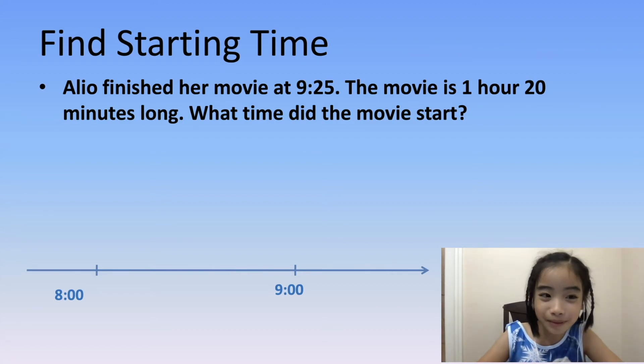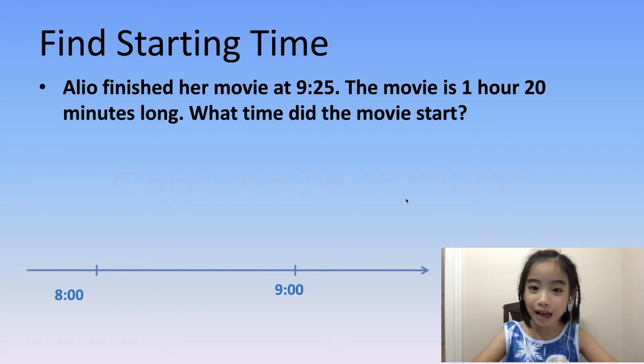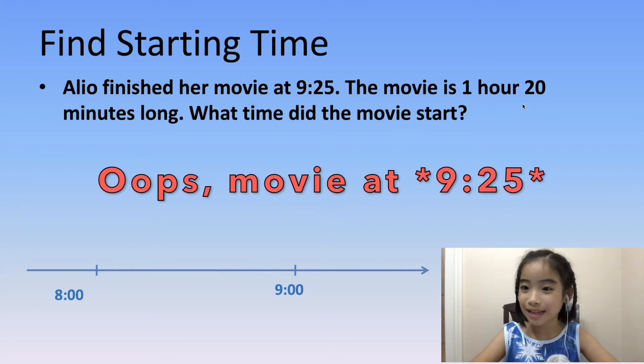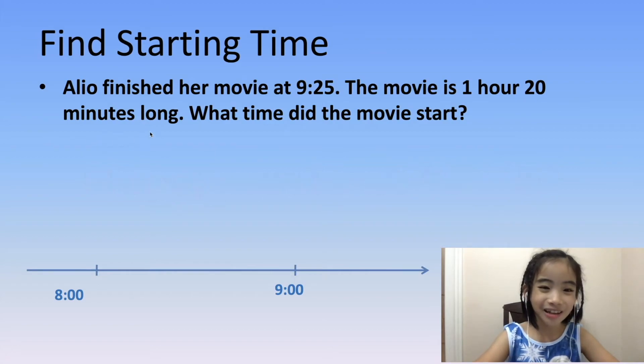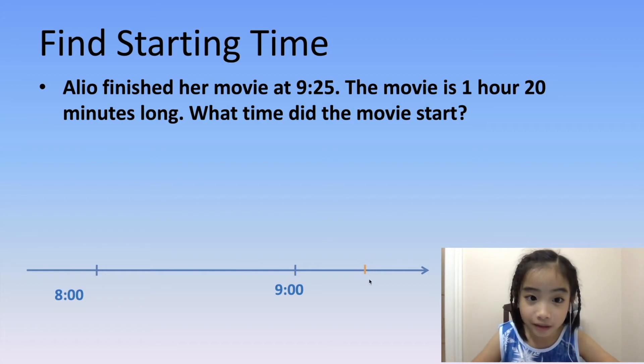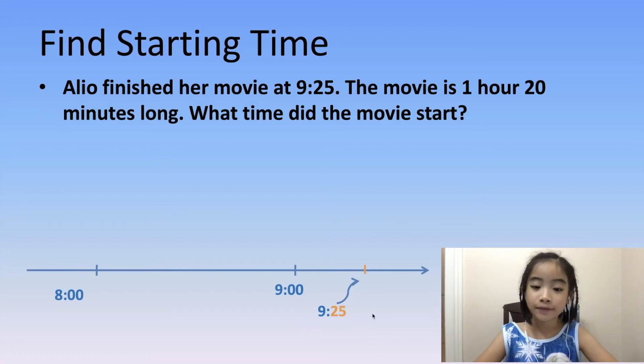The word problem is: Aliyo finished her movie at 9:25. The movie is 1 hour 20 minutes long. What time did the movie start? This short yellow line over here is 9:25. From 9:25 to 9 o'clock is 25 minutes. We know that the movie is 1 hour and 20 minutes long.